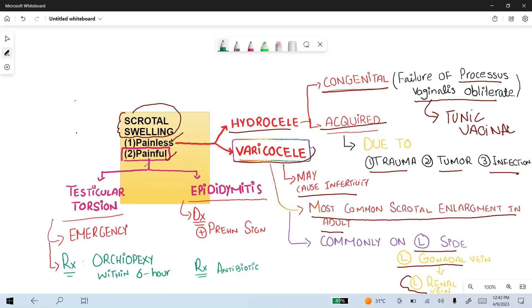Painful scrotal swelling includes testicular torsion, which is an emergency. It is diagnosed by the cremasteric reflex. In testicular torsion, the cremasteric reflex is absent. Absent cremasteric reflex is diagnostic for testicular torsion. Surgical orchiopexy within six hours should be done. If not done, it will lead to infertility.